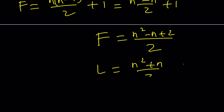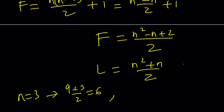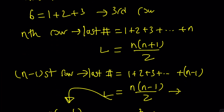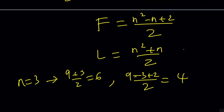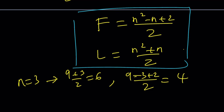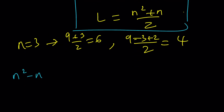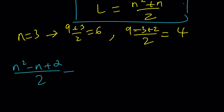The last number should be larger, and we can test it. For n = 3, the last number is (9+3)/2 = 6 ✓, and the first number is (9−3+2)/2 = 8/2 = 4 ✓. That's correct because 4 is really the first number in row 3. Now I need to find the sum of the consecutive integers from the first number (n²−n+2)/2 up to the last number (n²+n)/2.